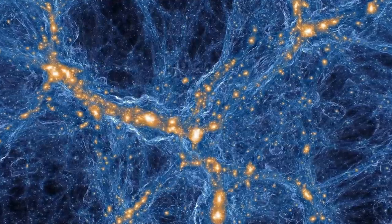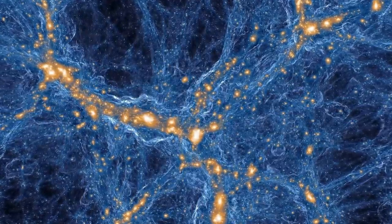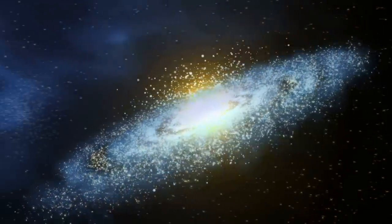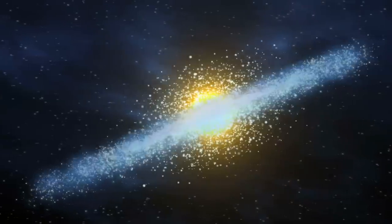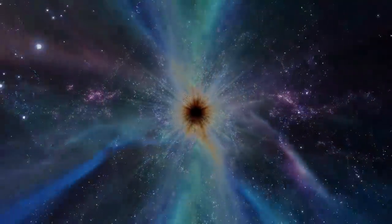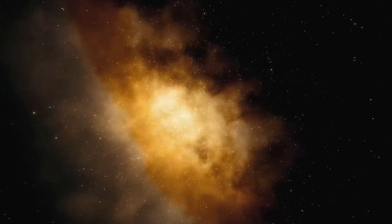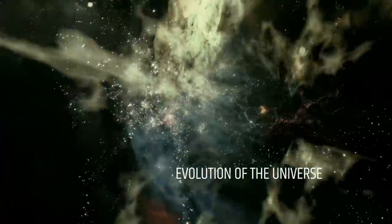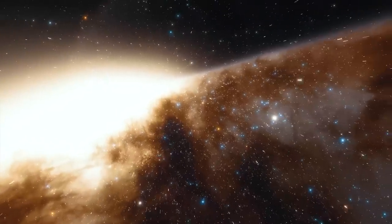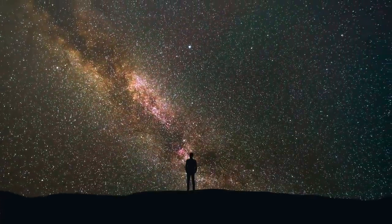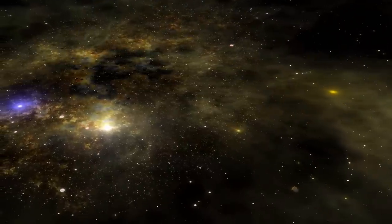The Great Attractor also seems to be located at the center of a large, low-density region of space known as the Zone of Avoidance. This region is so named because it is difficult to observe due to the large amounts of dust and gas in our own galaxy that block the view of distant objects. The study of the Great Attractor and the Zone of Avoidance is important for understanding the large-scale structure and evolution of the universe. It is also an active area of research, and scientists continue to study this gravitational anomaly in order to learn more about the mysterious nature of dark matter and the forces that shape our universe.